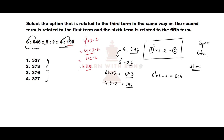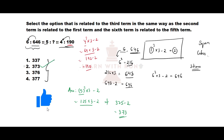That verified our pattern. Now let us find the answer. 5 cubed multiplied with 3, we have to subtract 2 from it. 5 cubed is nothing but 125, multiplied with 3 minus 2. 125 times 3 is 375, subtract 2 gives 373, which is option number 2.